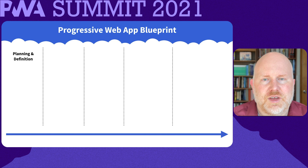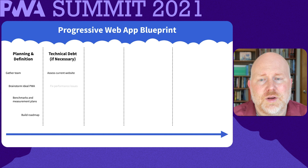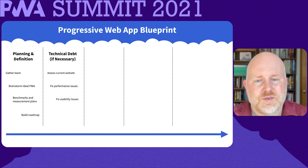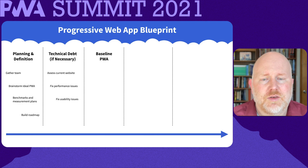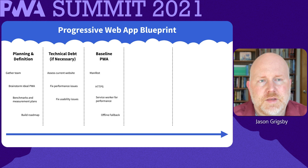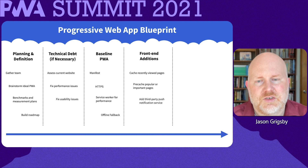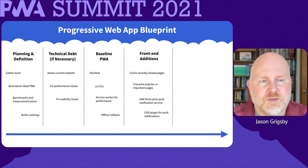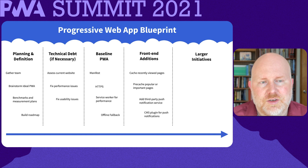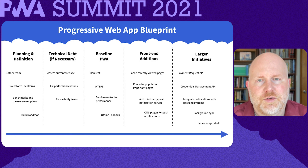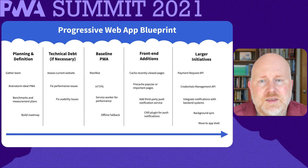After you've got your direction set, you should assess your site to see if there's any technical debt that needs to be addressed. If the site is too slow or isn't usable on small screens, a PWA isn't going to fix those issues. Next, you might build a baseline progressive web app by adding a manifest file, a service worker, and an offline fallback. Then we recommend looking at front-end additions, because oftentimes it becomes much more complex when you include other teams inside your organization. Start looking at caching recently viewed pages or pre-caching popular pages, and maybe add a simple push notification service — you can do those things without involving too many people. You build up the credibility you need to tackle larger initiatives like the payment request API, credential management, and push notifications. The great thing about a roadmap like this is that once you're past the planning stages, you can release those improvements incrementally and each one provides value to your users.